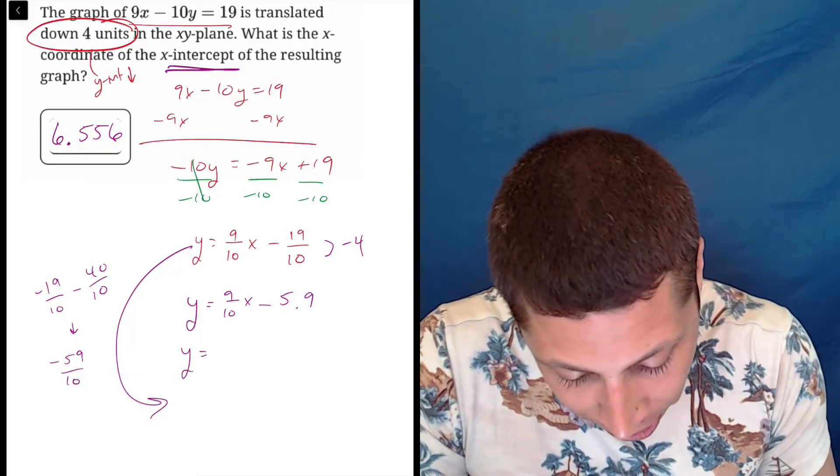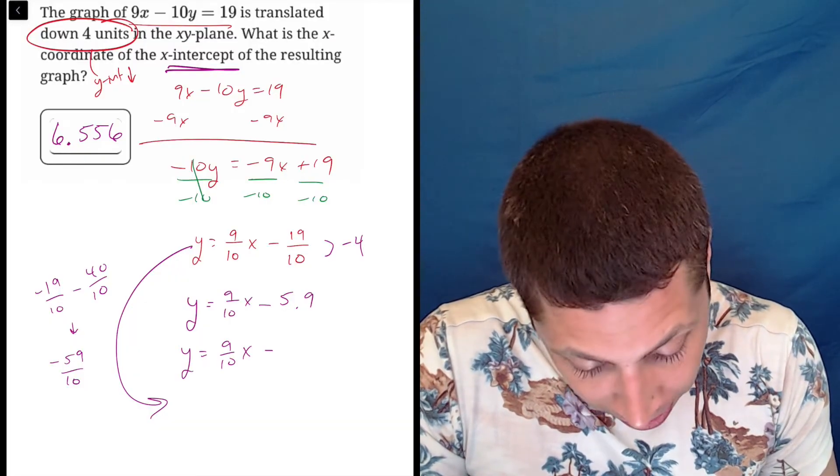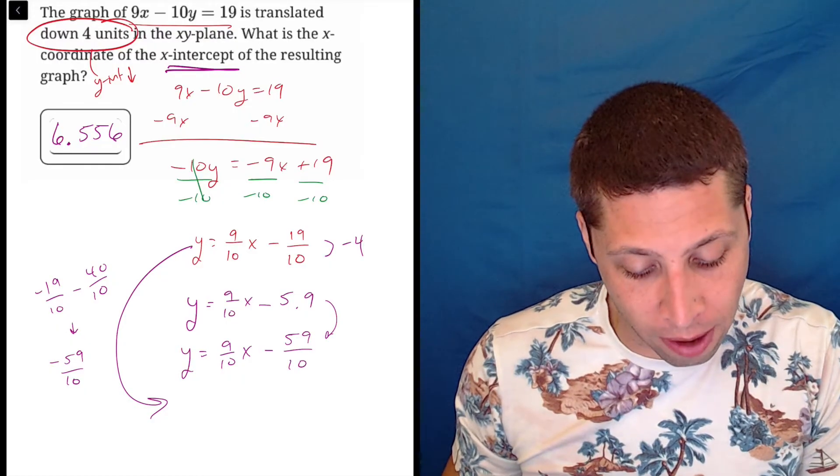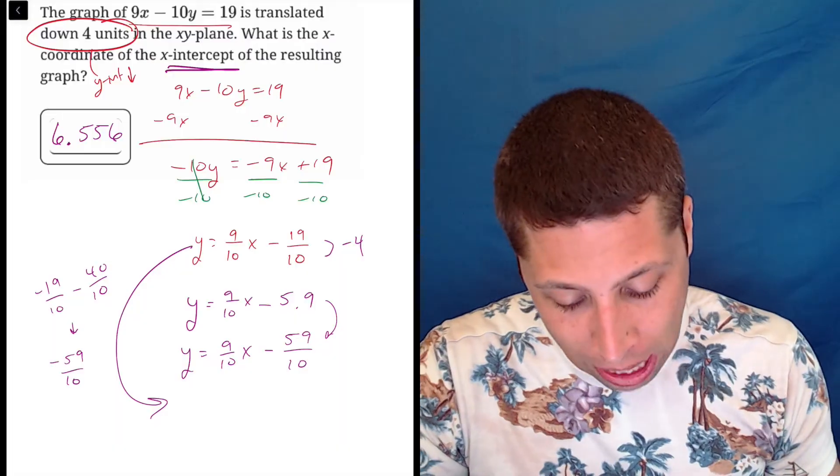And so this same equation is 9 tenths X minus 59 tenths. And I guess I could have just gotten that from the 5.9. Tenths are not hard to convert between decimals and fractions.